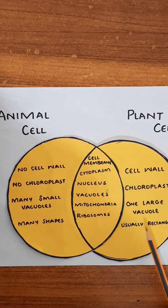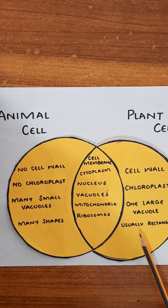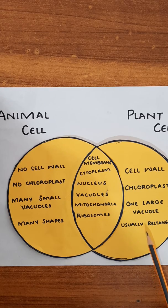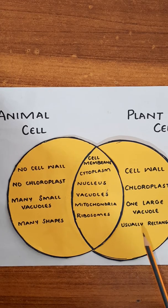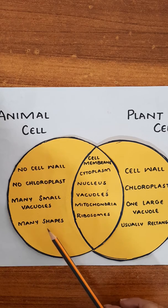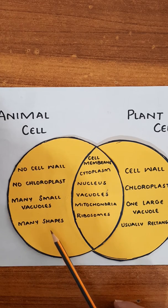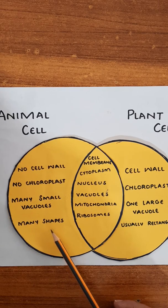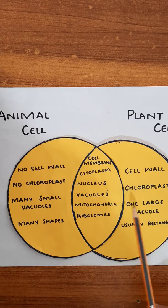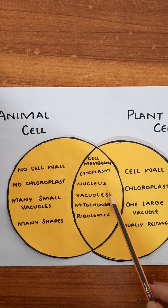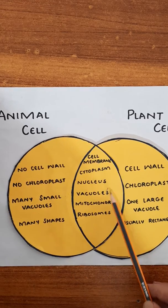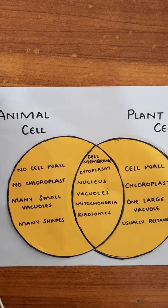Plant cells are usually found in a rectangular or hexagonal shape, while animal cells are found in different shapes. So I think you have got the idea of how plant and animal cells are different from each other.